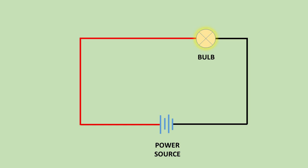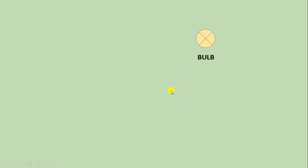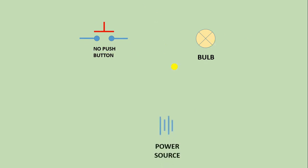Here I am taking a simple lamp. To glow this lamp, you need to provide phase supply and neutral supply. What I am going to do is use this push button — after pressing it, I will try to glow this bulb. For this we need a power supply, so I use the symbol of a battery.